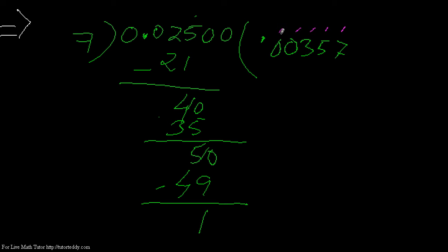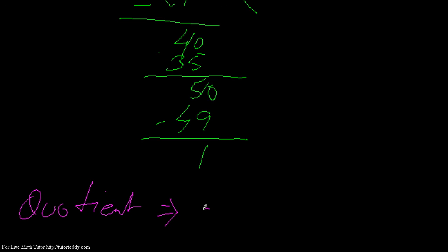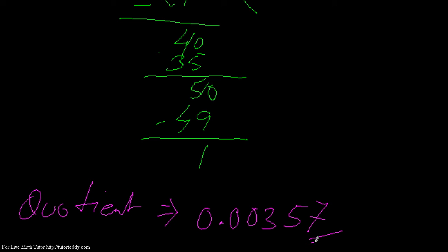The required quotient that the question asks us to find is 0.00357. Always remember: we write the zero before the decimal point because if there is nothing before the decimal point, we place a zero there — it just makes it look proper. So this is the final answer.